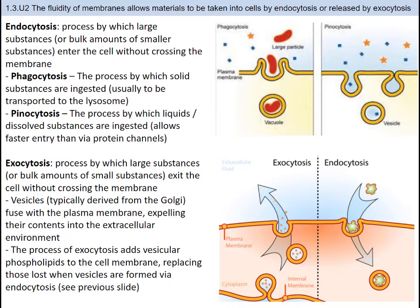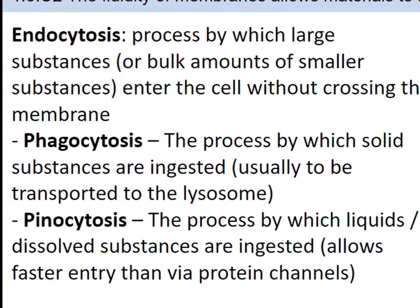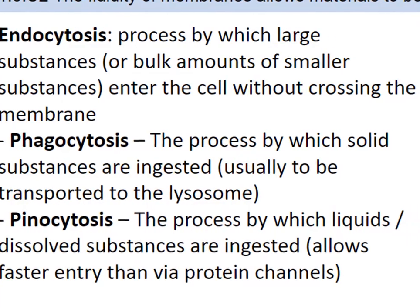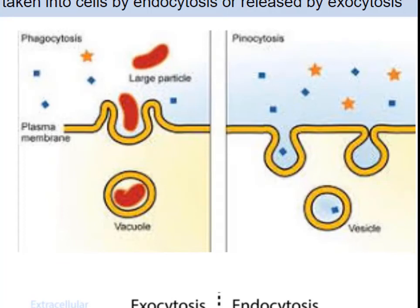When a cell needs to get a substance inside, it uses a process called endocytosis. In this process, the cell actively transports molecules across the cell membrane by engulfing them into vesicles formed from cell membrane capture and fusion. There are two types of endocytosis: one for solid substances called phagocytosis, and one for liquids and dissolved substances called pinocytosis. You can see that the substance entering the cell is engulfed and brought inside the cell's cytoplasm in a safe package.